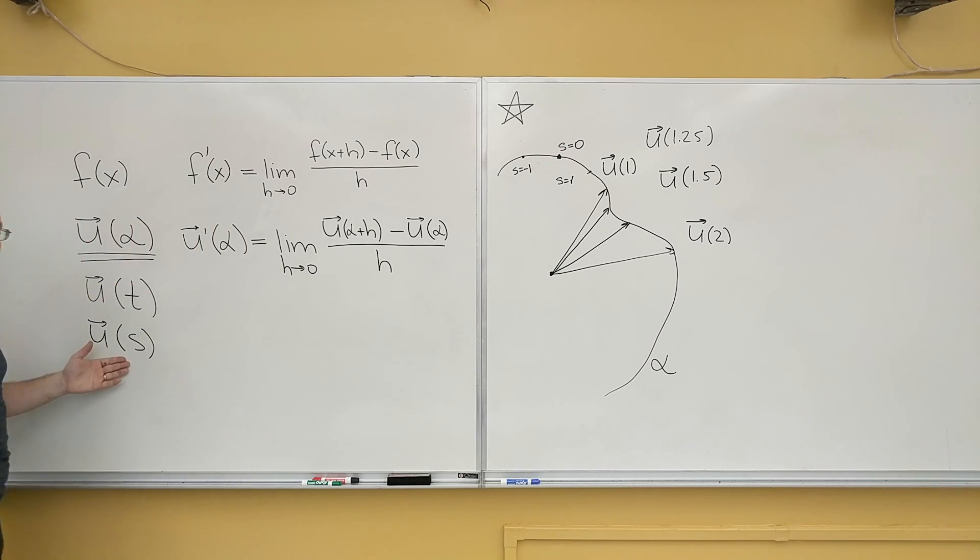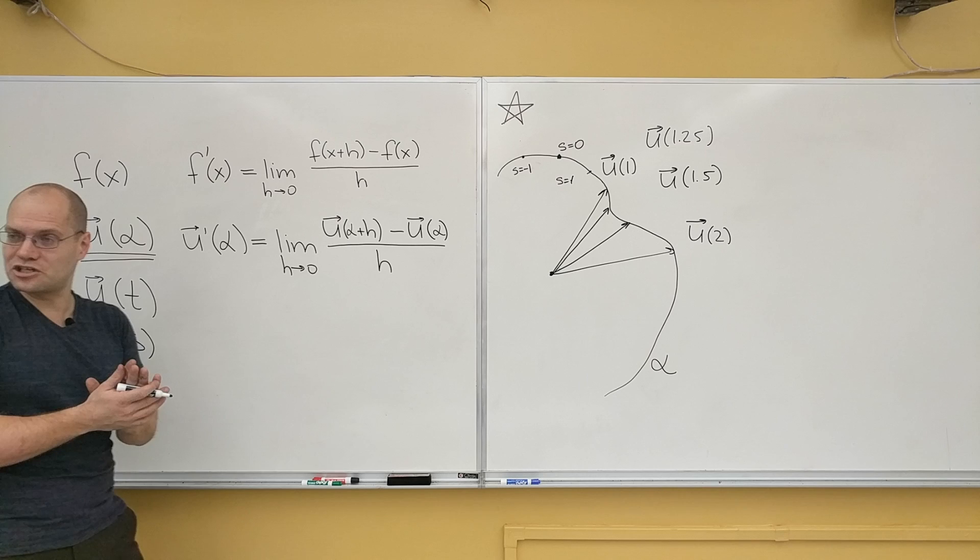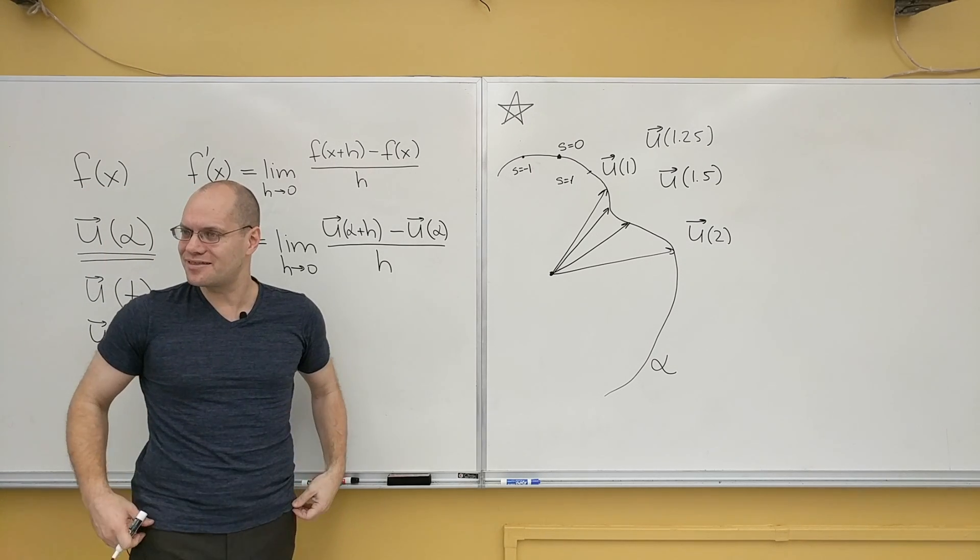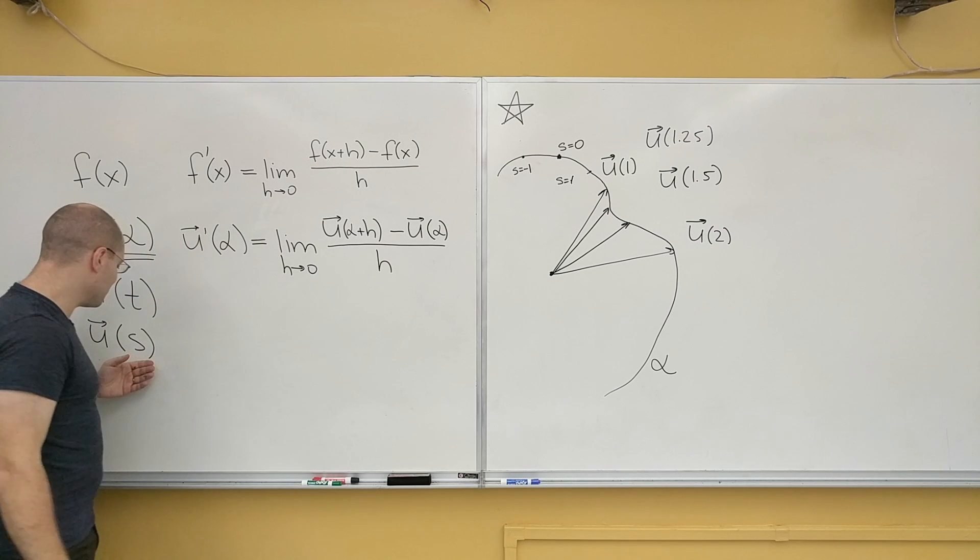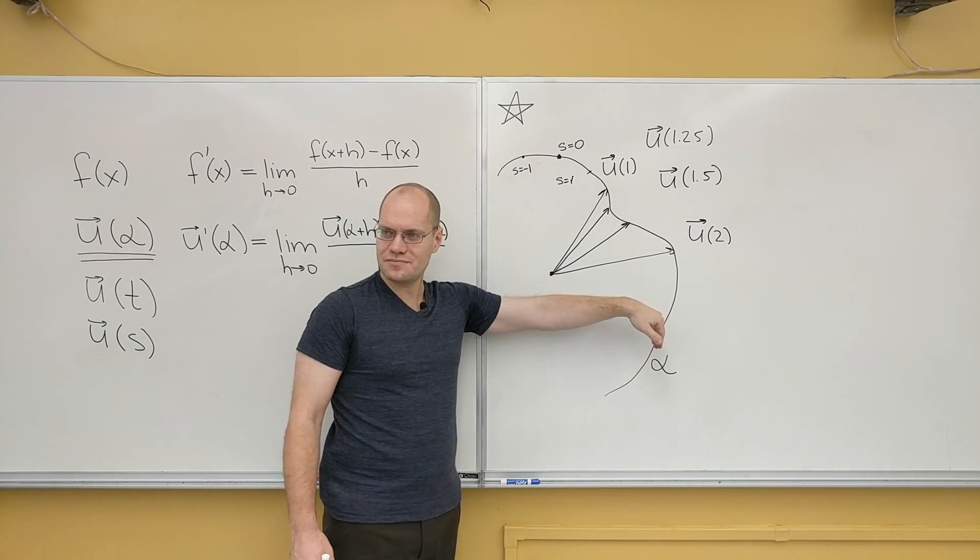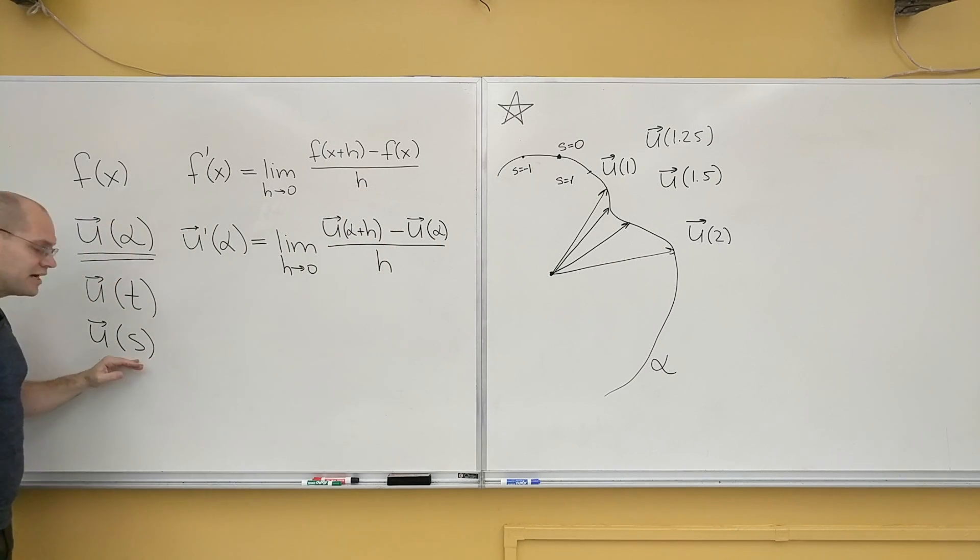So this kind of corresponds to a Cartesian coordinate system, right? What's the Cartesian coordinate system? Where all the basis vectors are unit length. So this kind of corresponds to a Cartesian coordinate system along the curve. So whenever possible, we'll try to avoid this. But it exists. Okay.